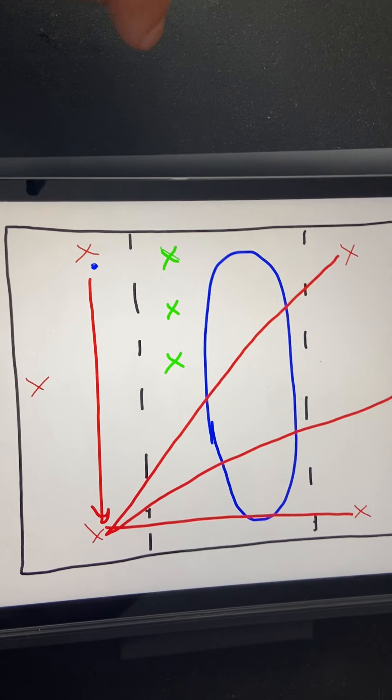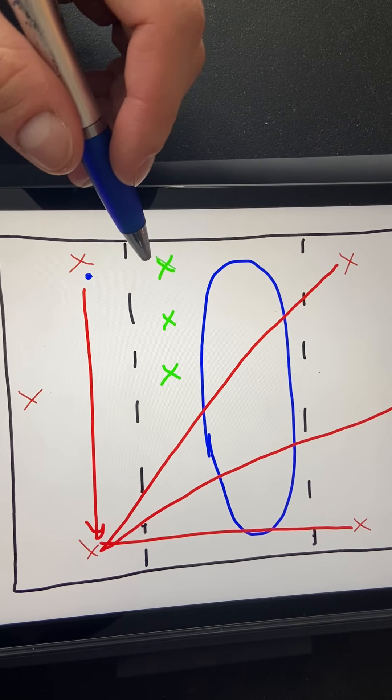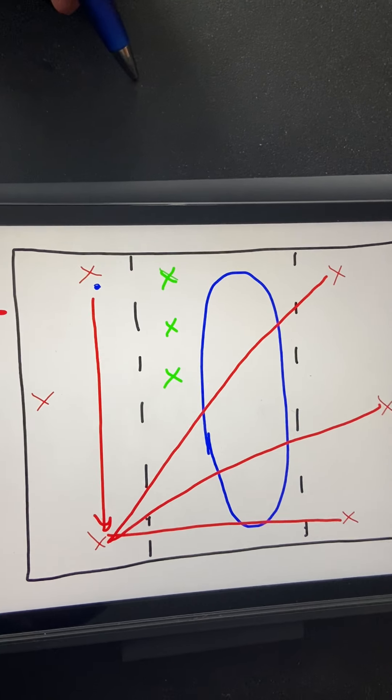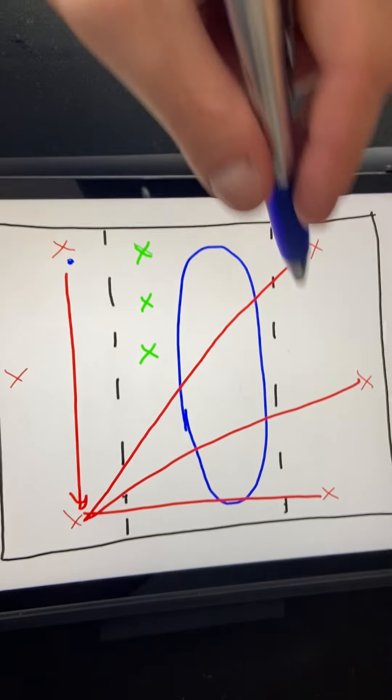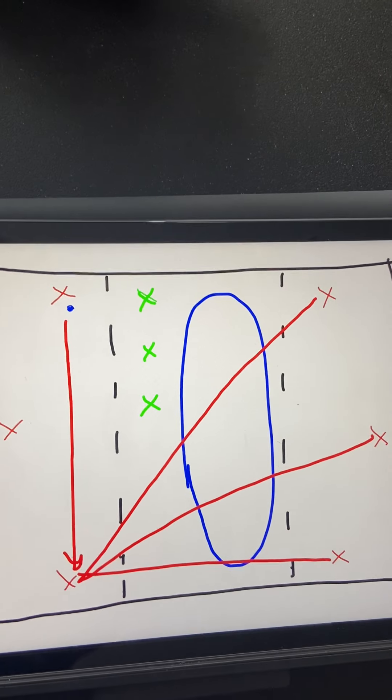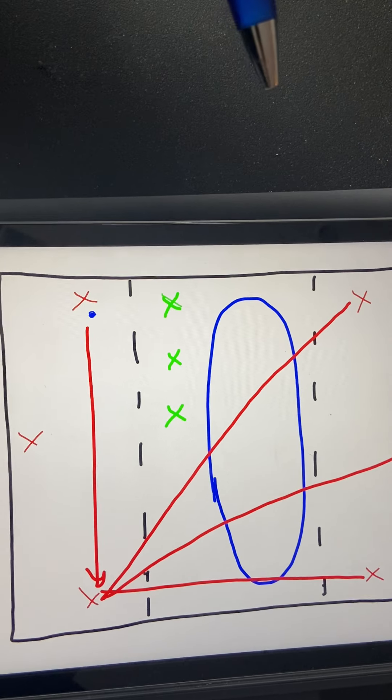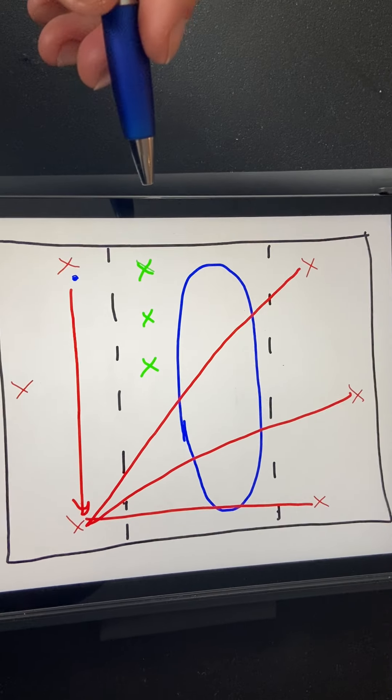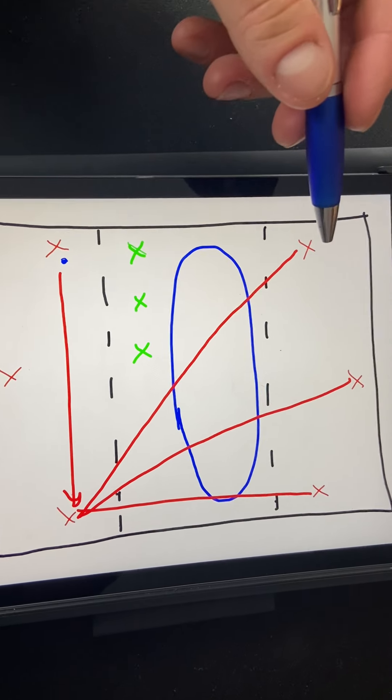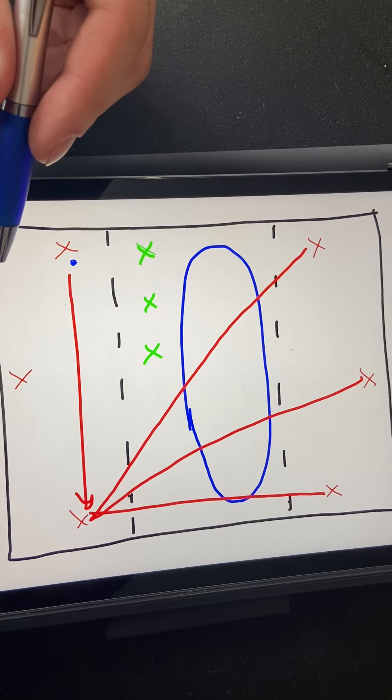And then the other thing is if so we talked about this player stepped. Well, what happens if the other two players step? We create this huge gap between our defensive line and our midline.